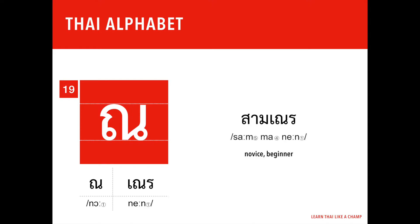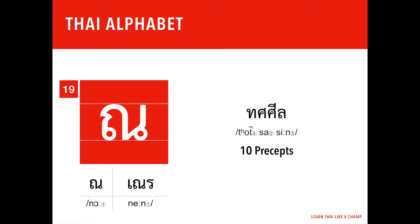Did you know that novice monks have to follow what we call Tosasin, which means 10 precepts, or 10 rules, or you could say 10 commandments — as opposed to monks who have to follow 227 precepts or rules in everyday life?